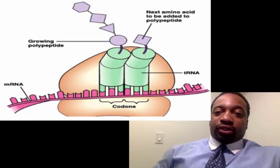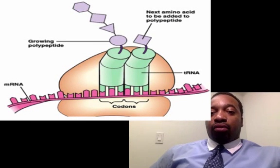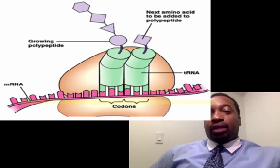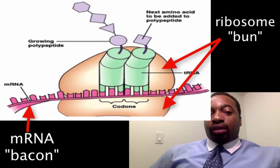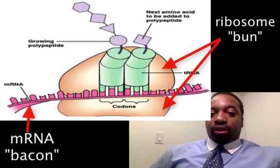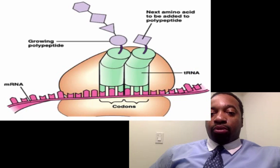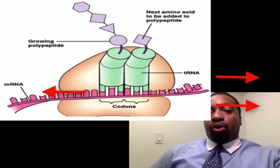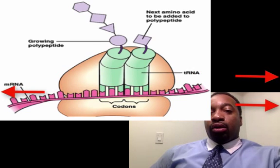Looking at this image, you can see a snapshot of the process. The mRNA fits in between two subunits of the ribosome — think of it like a piece of bacon fitting in a bun. The ribosome is the bun, and the strip of mRNA is the bacon that goes in between. The ribosome moves along, reading the mRNA.